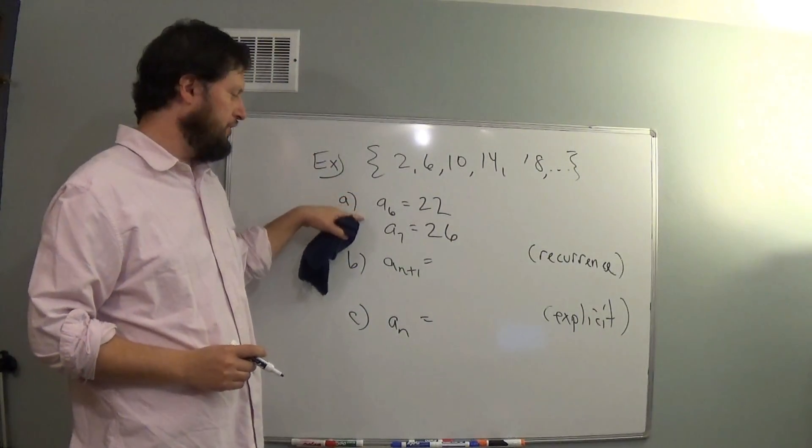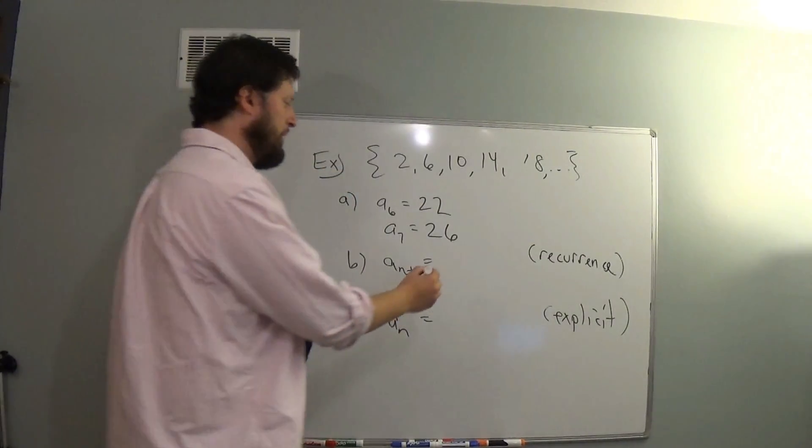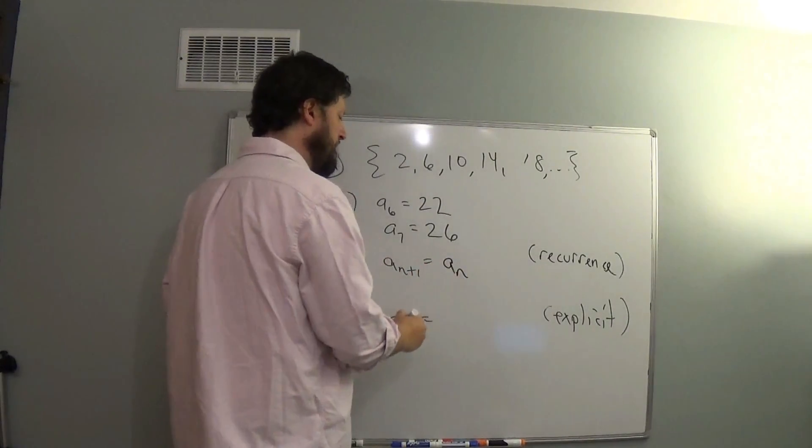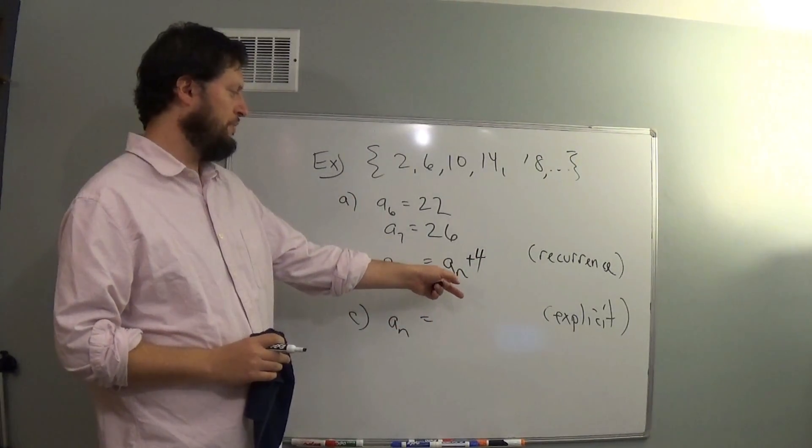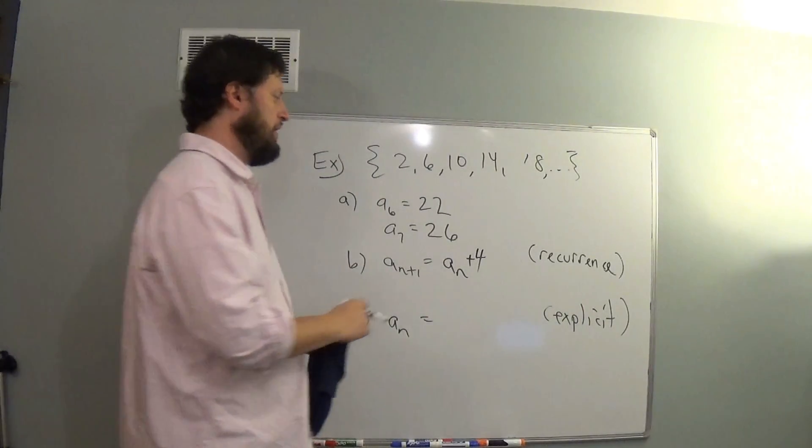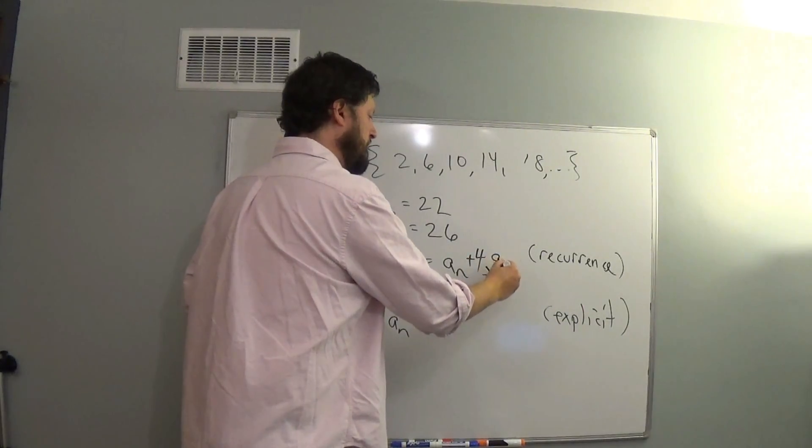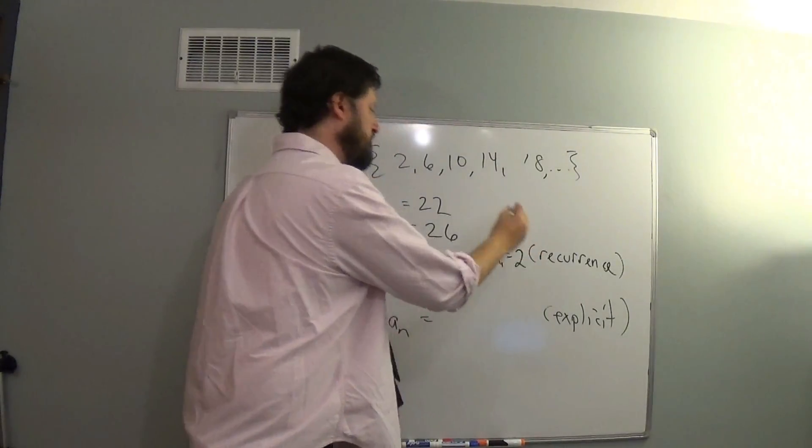That way of describing it also tells us what's happening with the recurrence relation. If I'm adding 4 each time, that means a(n+1) had better be a(n) + 4. I take the previous term, I add 4 to it, and that gives me the next term. But remember with the recurrence relation, we also need to give you the starting value, and the starting value is 2.